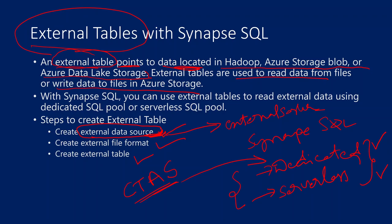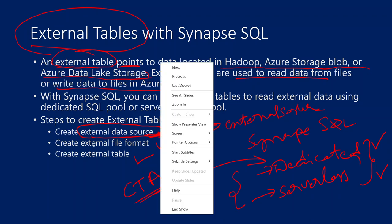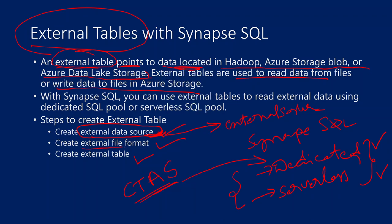Your storage can be Data Lake Storage Gen2 or whatever it is. For that storage, you need to create one external data source object inside your dedicated SQL pool or serverless SQL pool. Once you have that, you also need to create one external file format, which defines what is the format of the file. Once you have these two objects ready inside your database, then you can create an external table on top of them. If you are not clear about these concepts, please watch previous videos first.